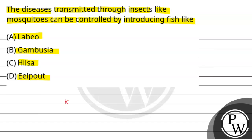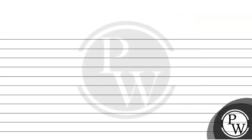The key concept for this question is control of insect-transmitted diseases. In insect-transmitted diseases, mostly there is malaria, there is chikungunya, there is dengue, there is filariasis, etc.